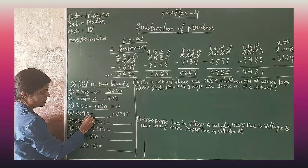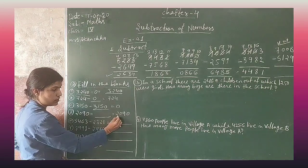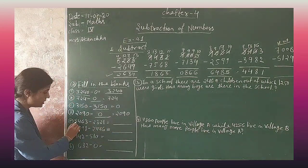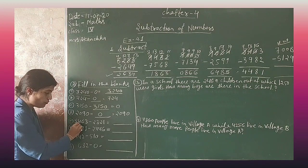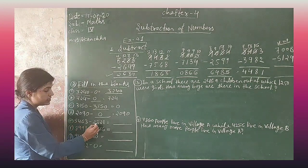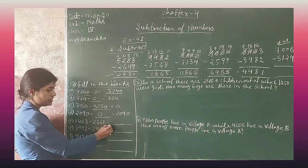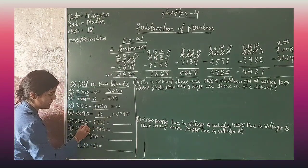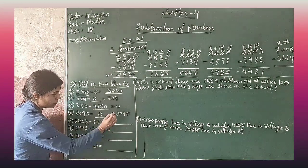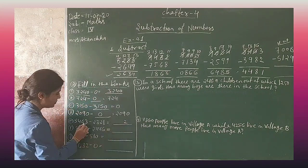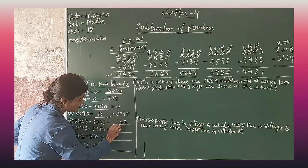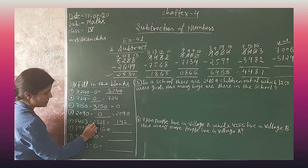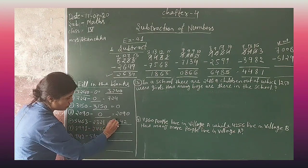2090 minus dash equals 2090 — answer is 0. And 5463 minus 2321: 3 minus 1 is 2, 6 minus 2 is 4, 4 minus 3 is 1, and 5 minus 2 is 3. This is your answer.